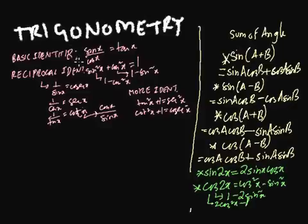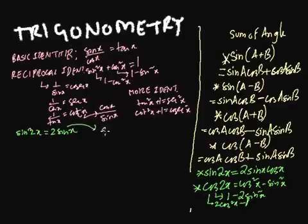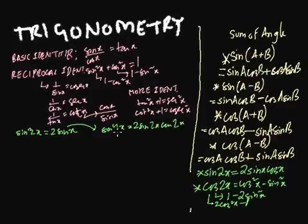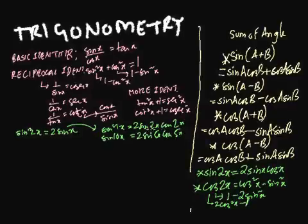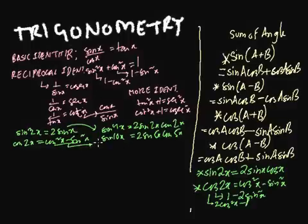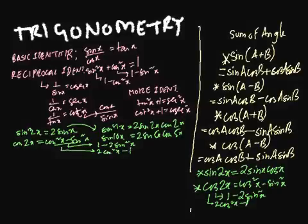We have also proved that sine 2x is identical to 2 sine x cos x — double angle, half angle. So sine 4x can be written as 2 sine 2x cos 2x, and sine 10x would be 2 sine 5x cos 5x. And cos 2x can be written as cos squared x minus sine squared x, or as 1 minus 2 sine squared x, or as 2 cos squared x minus 1.